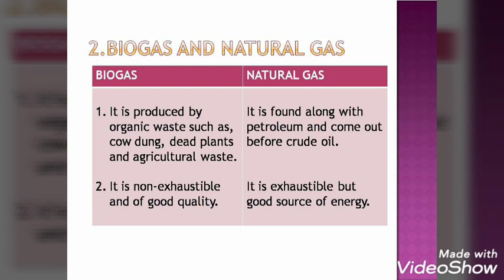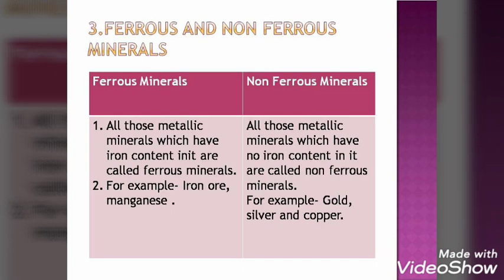The third distinction is between ferrous and non-ferrous minerals. 'Ferrous' comes from the word iron. Metallic minerals that contain iron are ferrous minerals — examples are iron ore and manganese. Metallic minerals that do not contain iron are known as non-ferrous minerals. They are metallic but have no iron content. Examples are gold, silver, and copper.